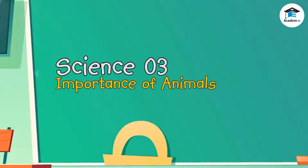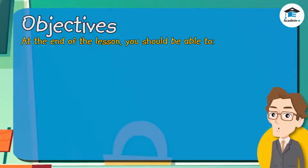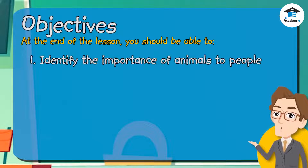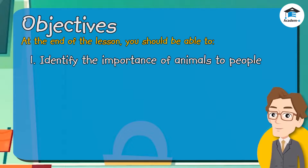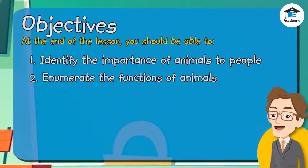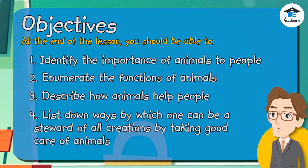Science 3: Importance of Animals. Objectives — at the end of the lesson, you should be able to identify the importance of animals to people, enumerate the functions of animals, describe how animals help people, and list down ways by which one can be a steward of all creations by taking good care of animals.